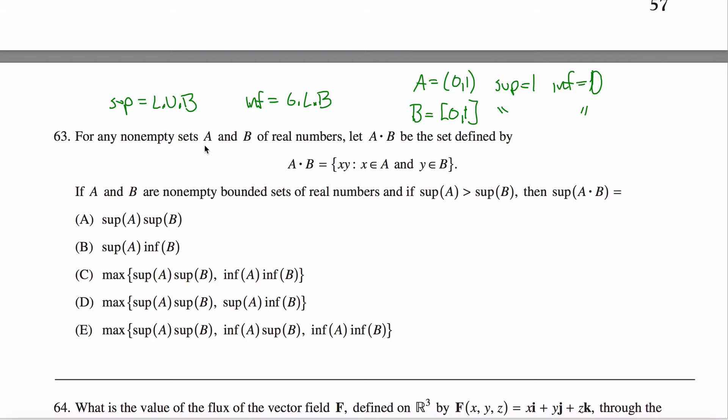What we're doing is we're taking these two sets A and B and they have real numbers in them, and A·B we're defining as the set containing all of the XY products so that x comes from A and y comes from B.